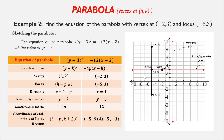Now we plot and locate the endpoints of the latus rectum. As we can see, the distance between the endpoints is 12 units. This is the sketch of the parabola (y - 3)² = -12(x + 2).